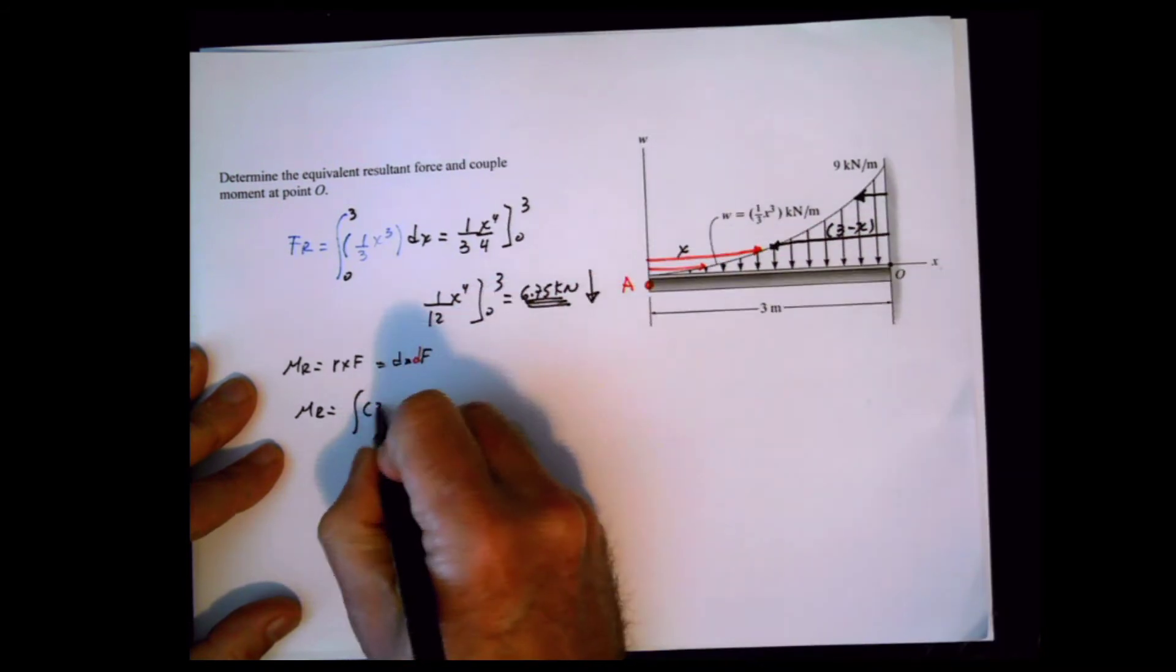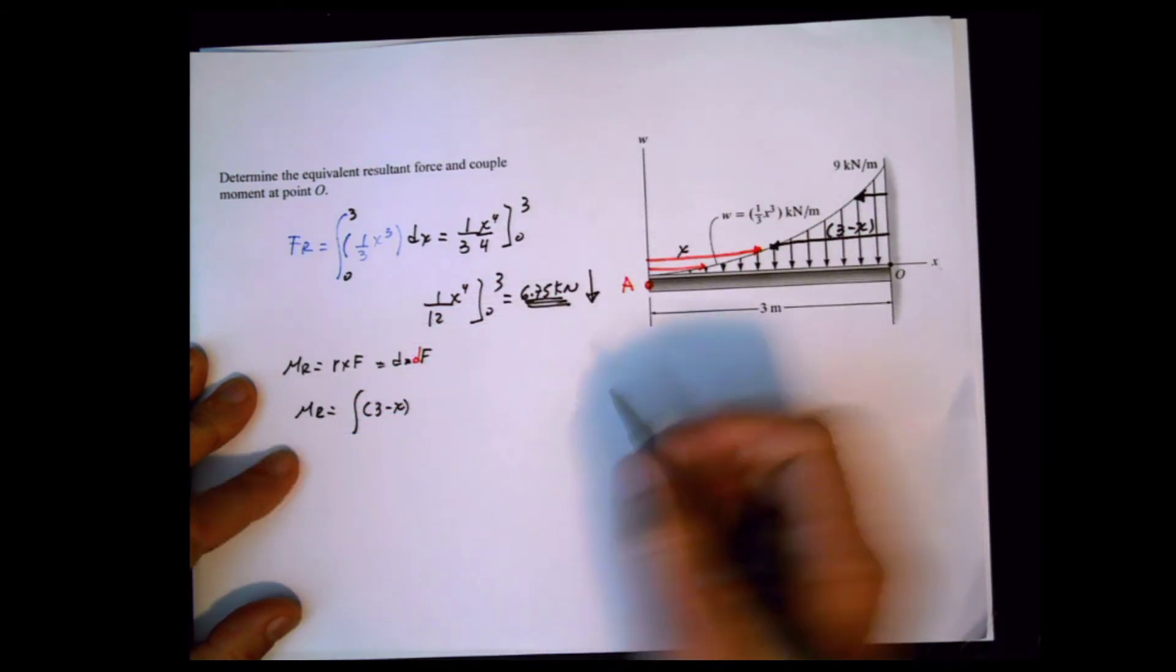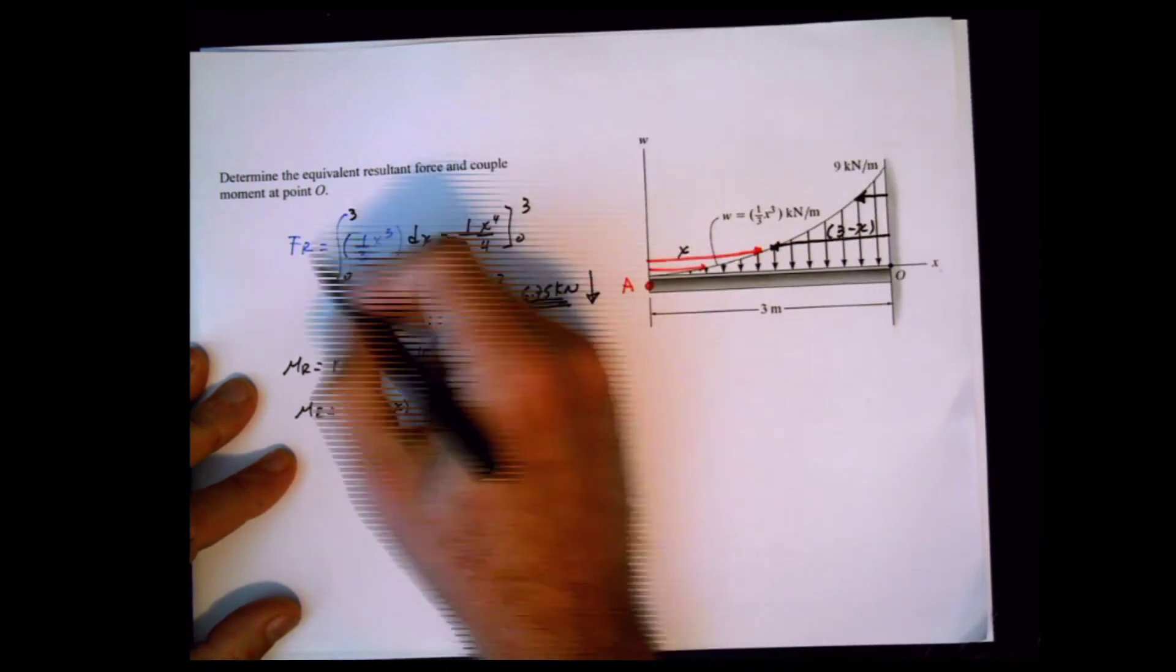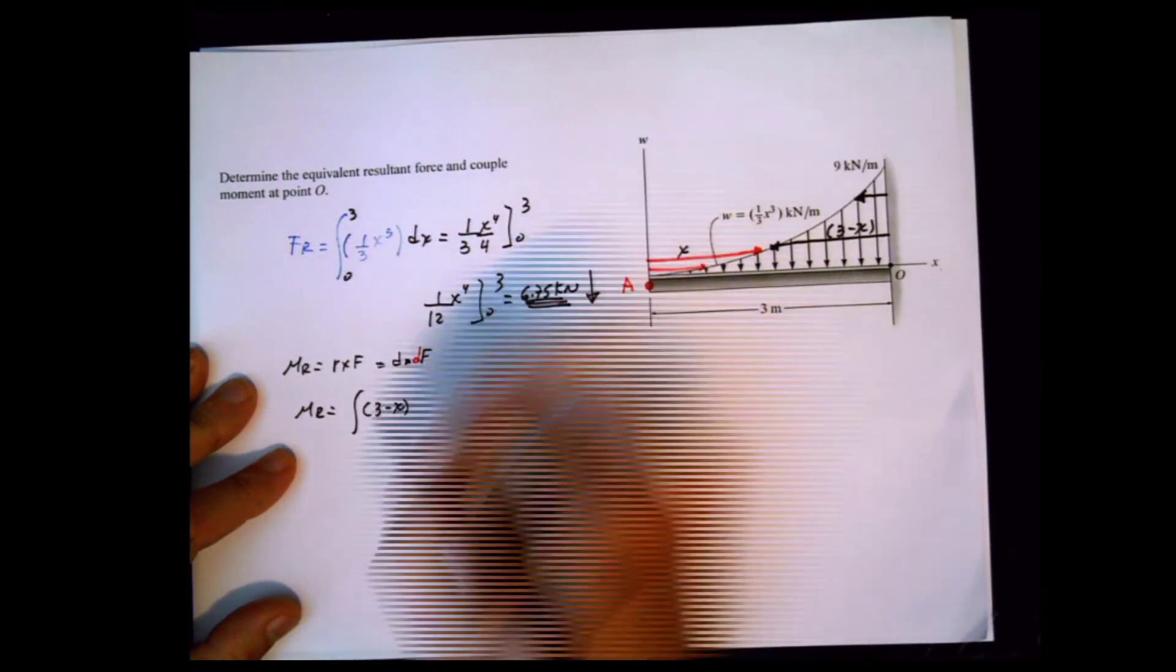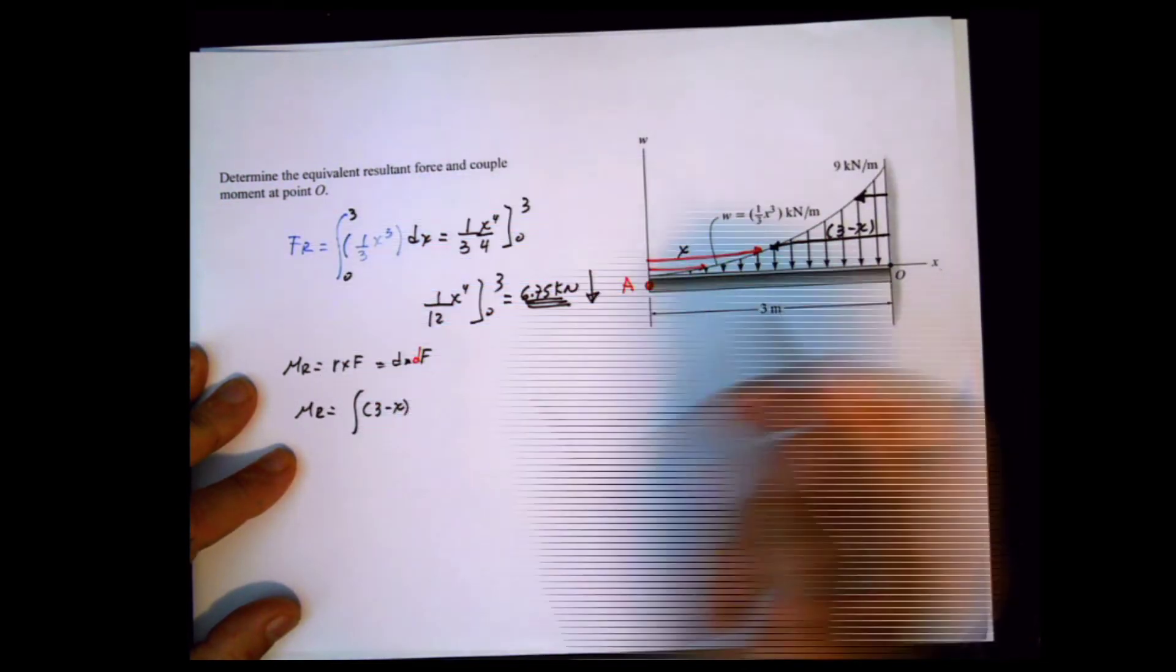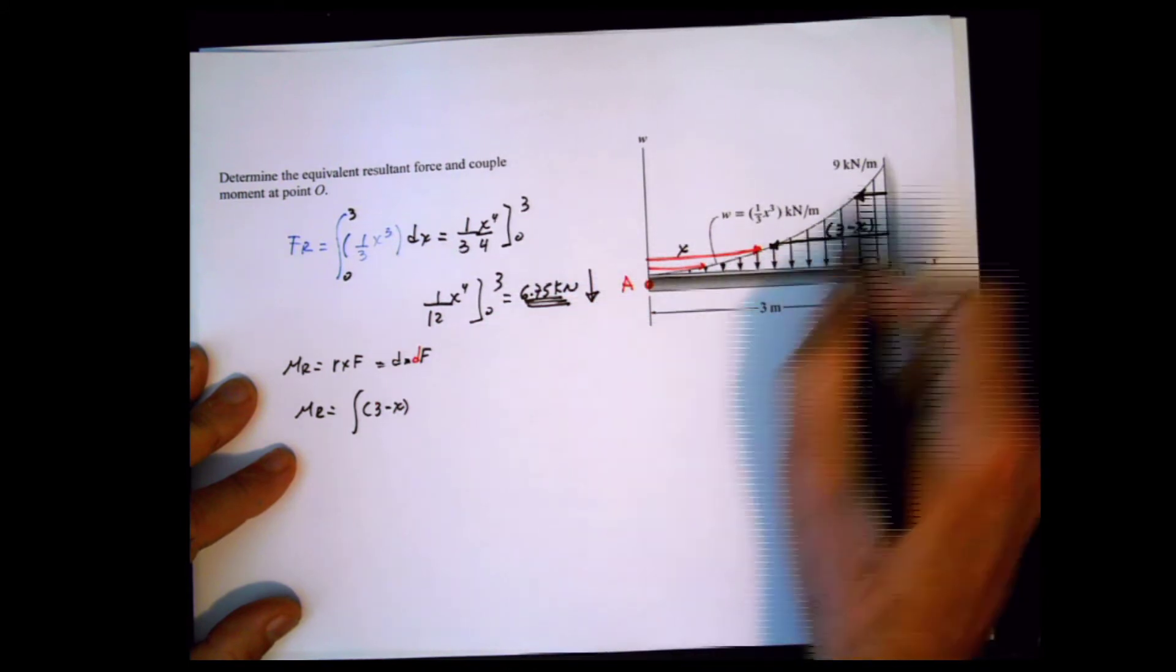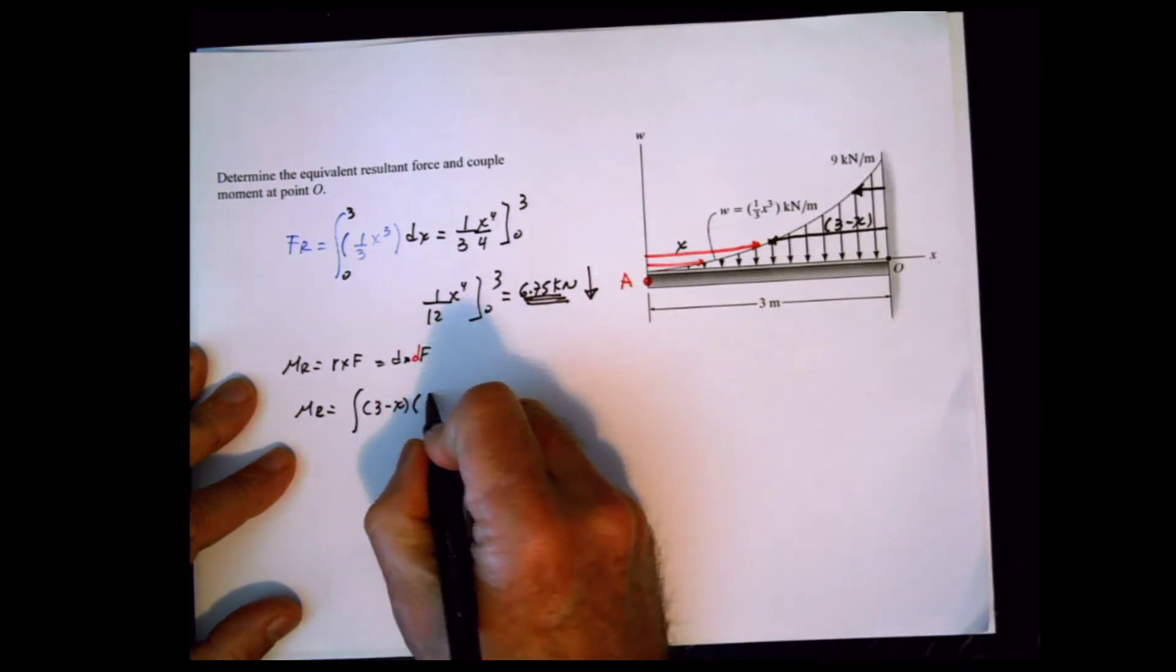To find the resultant moment, the resultant moment is the integral of that distance, 3 minus x, multiplied by the differential force, which is one-third x cubed dx.